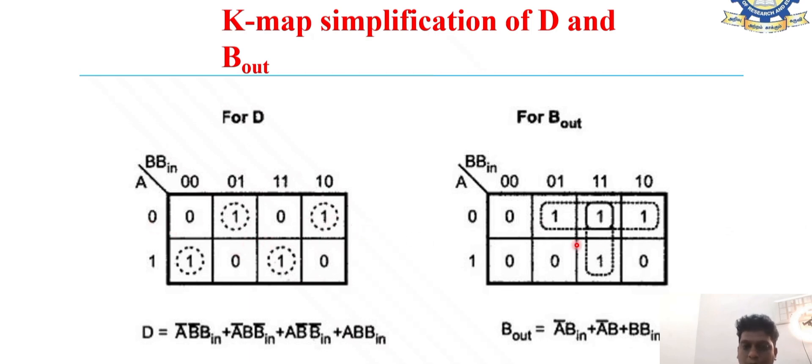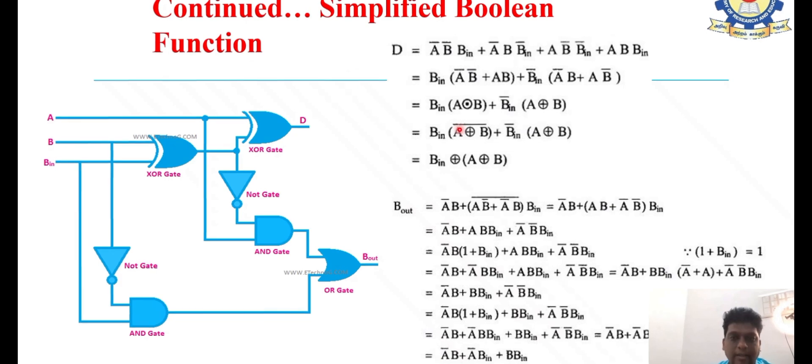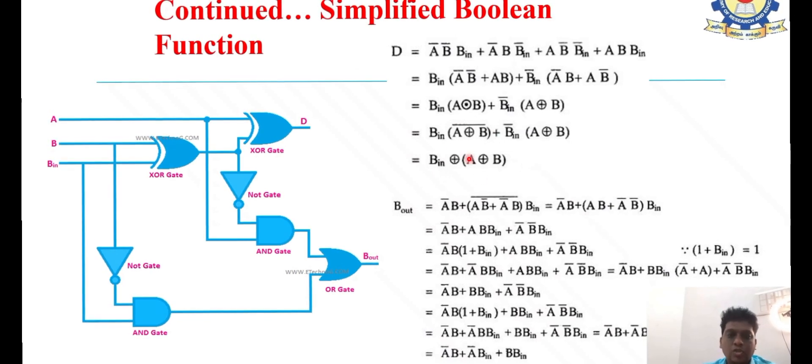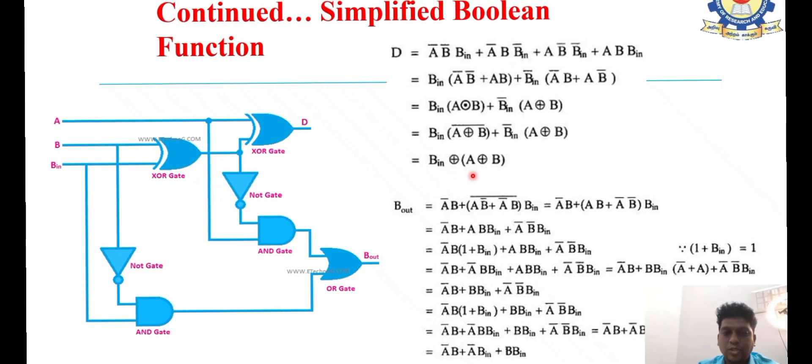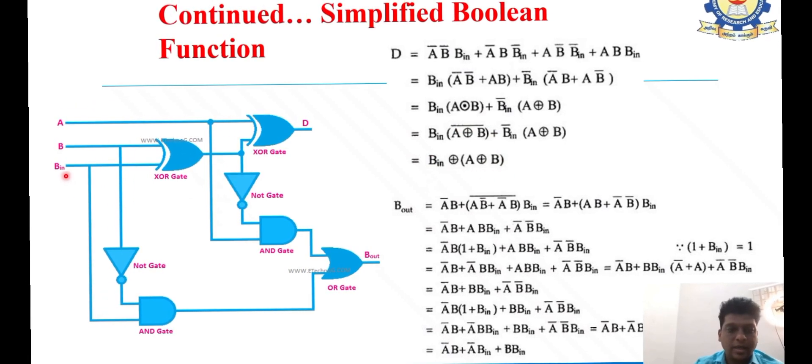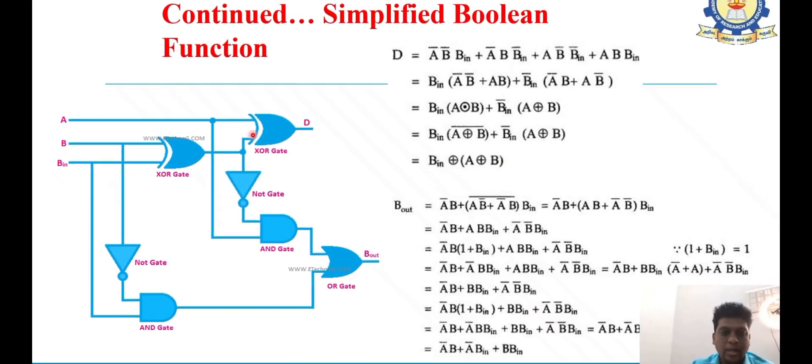We plot the K-map with 8 cells for three variables. We can use B C or B B in as inputs. After plotting and simplifying, for difference we get A exclusive-OR B exclusive-OR C or B in. This is implemented with XOR gates. This is the difference and B out, where B out represents the output borrow for full subtractor.